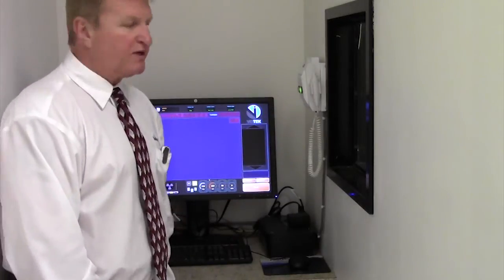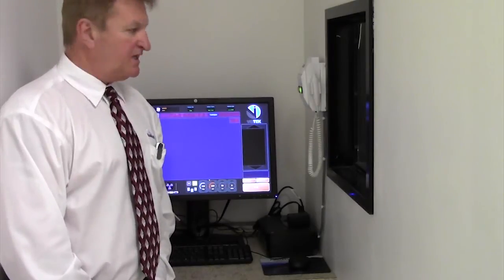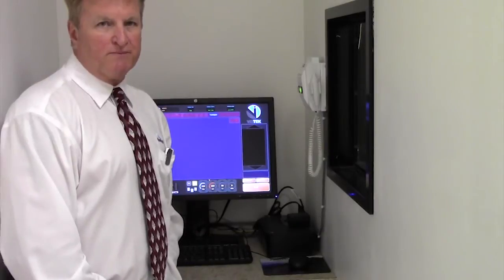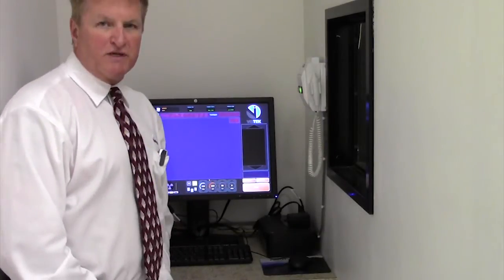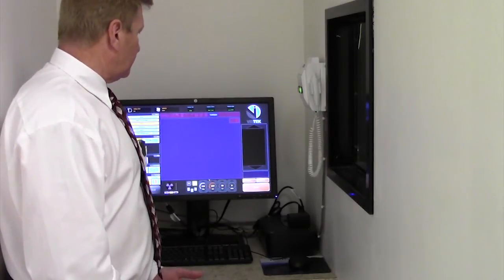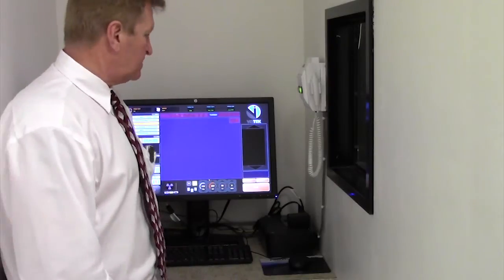To make an exposure, there's a two position hand switch. The image is acquired in approximately four seconds. Once the image is acquired, you have the tools to manually shutter. You can review the exposure index using the standard exposure index numbers, as well as a repeat analysis for any rejected images that are kept in the system.